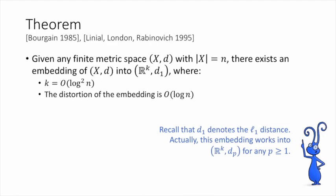The theorem that we're going to prove is the following. Given any finite metric space (X, d), where X has n points in it, there exists an embedding of (X, d) into (R^k, d_1) with the following properties. First, the target dimension k is going to be big O of log squared n. And second, the distortion of the embedding, so that is how much it messes up distances, is going to be big O of log n.